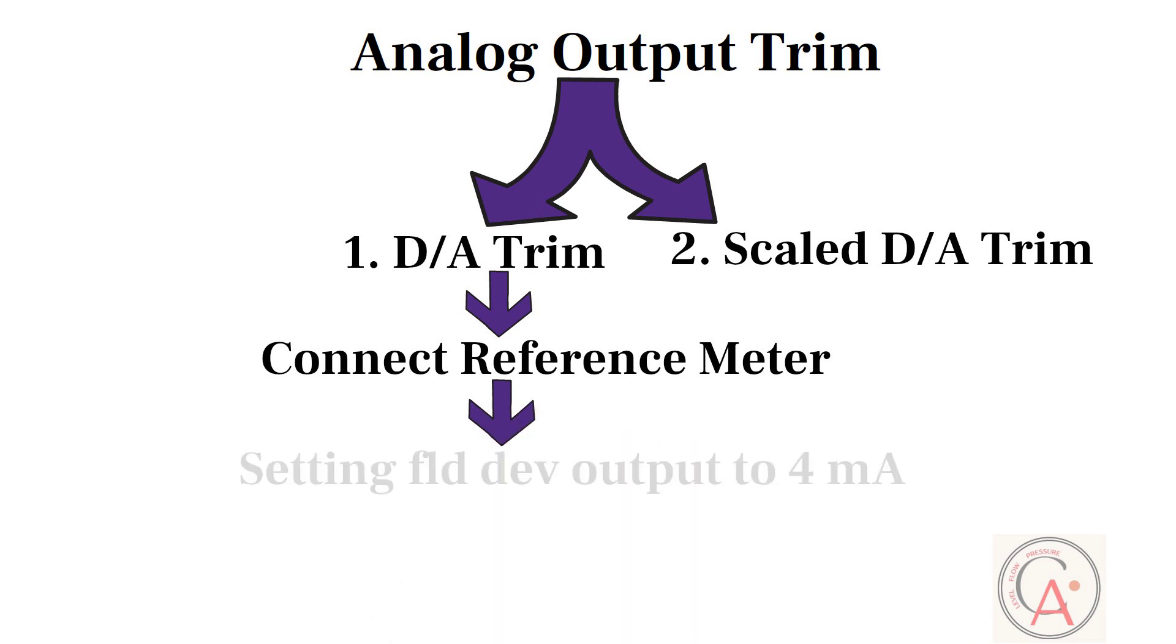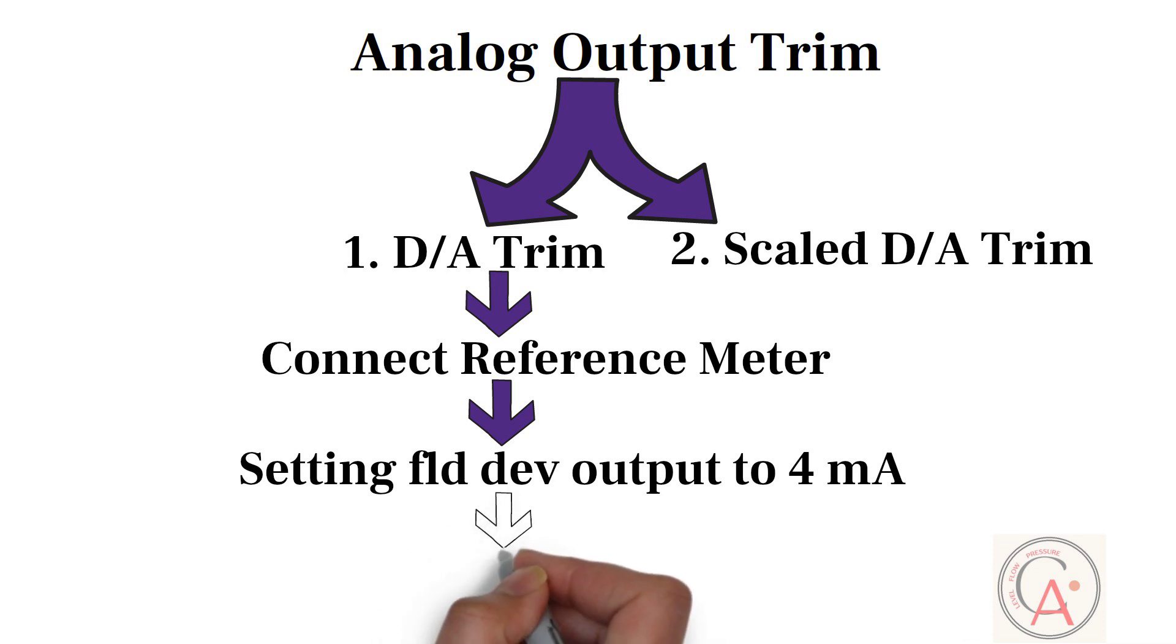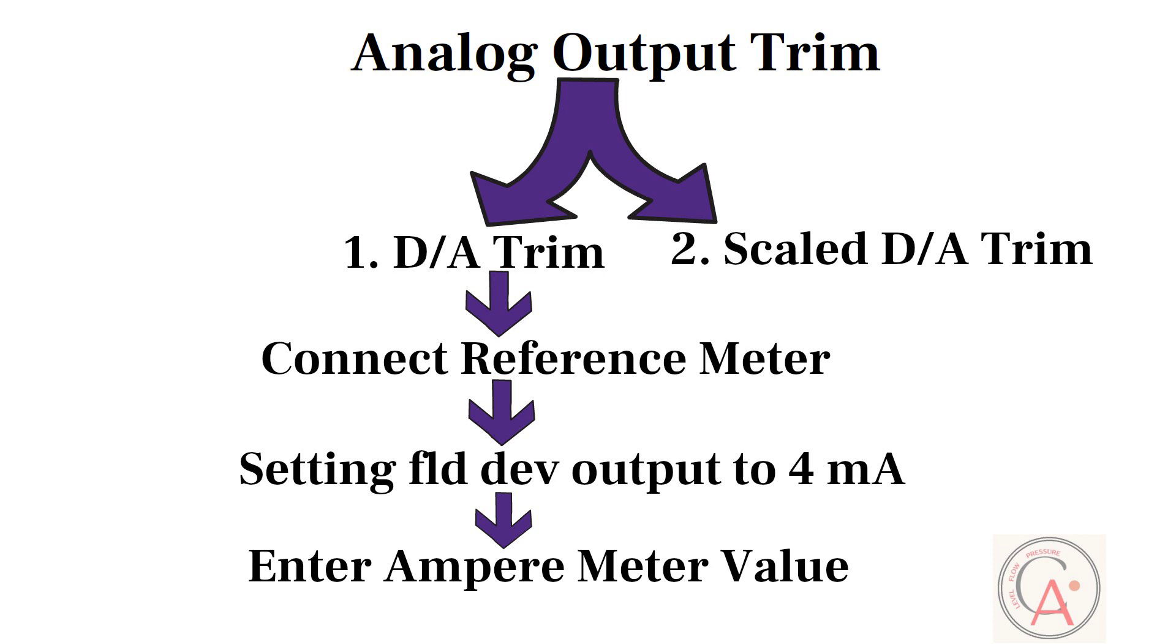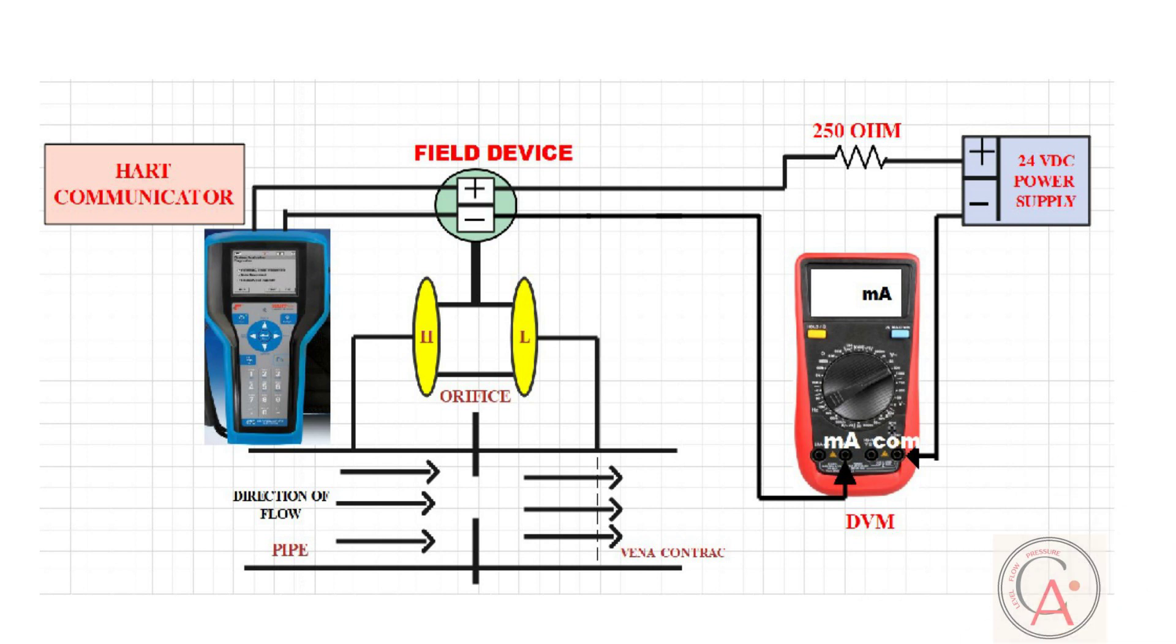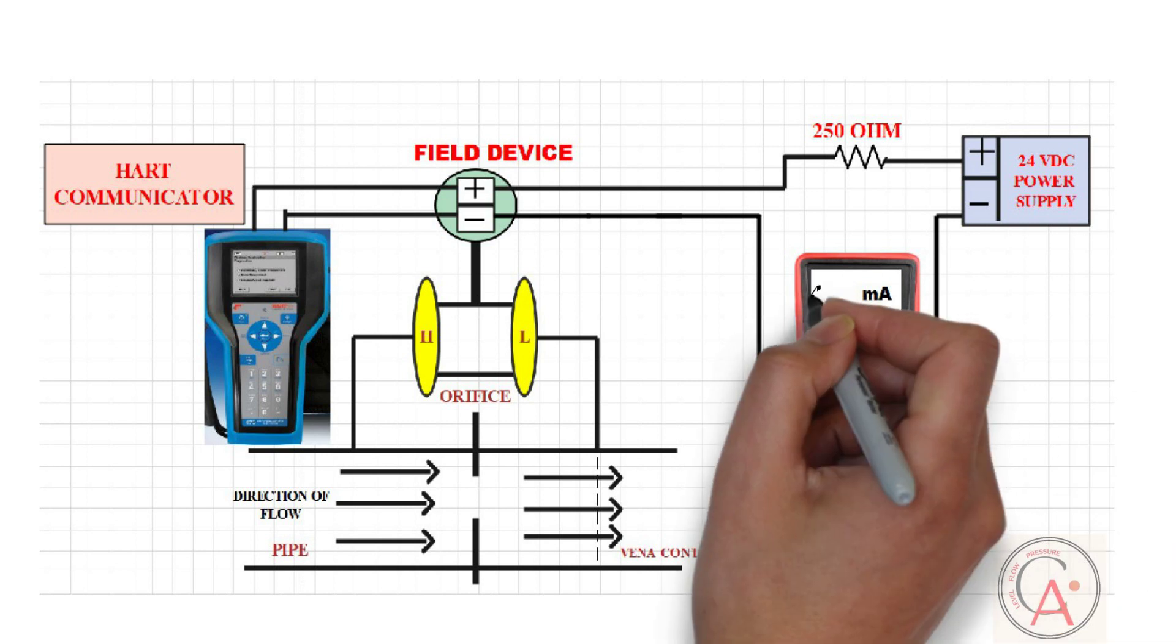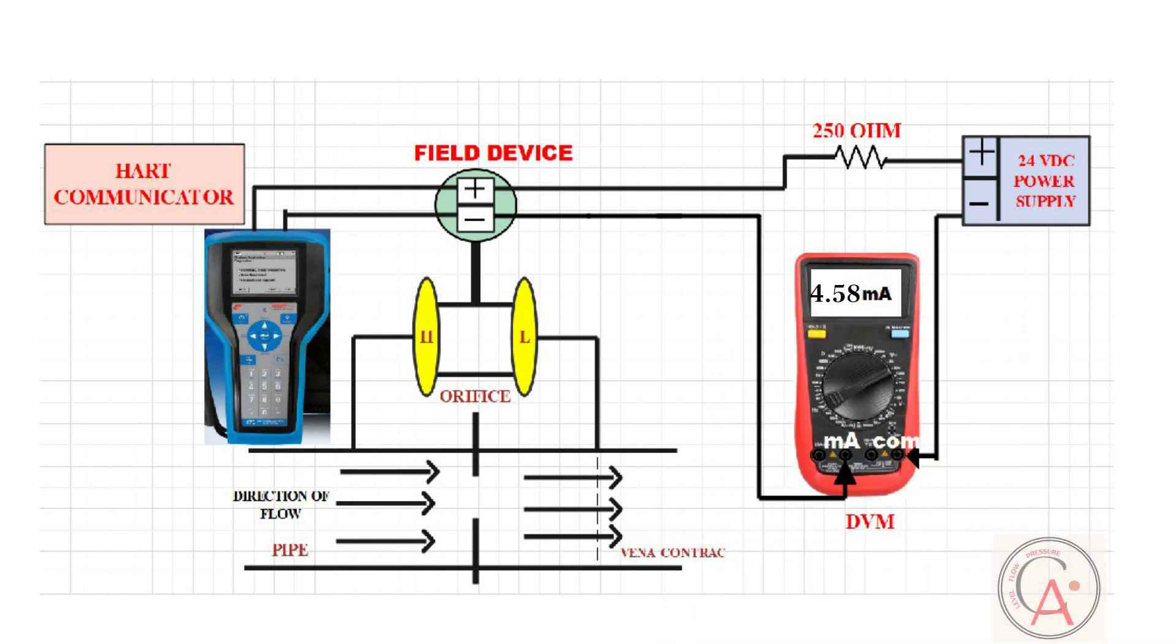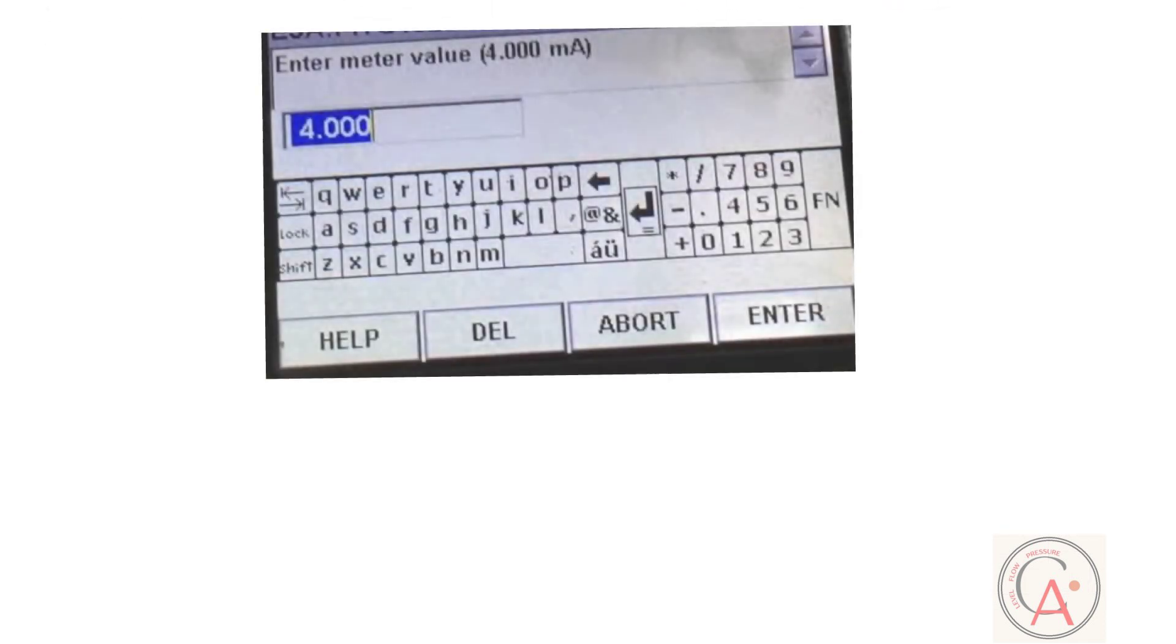Once you press ENTER button, setting field device to 4 milliampere message will appear on the screen. At this time, enter the value of ampere meter into HART communicator and press ENTER button. For example, if ampere meter value is 4.58 milliampere at 0 inches of H2O pressure, then enter 4.58 into HART communicator and press ENTER button.